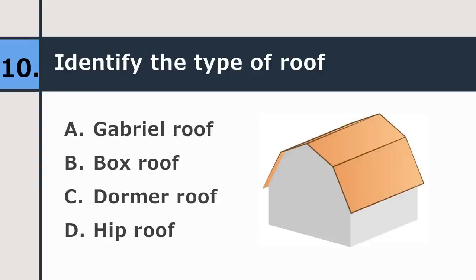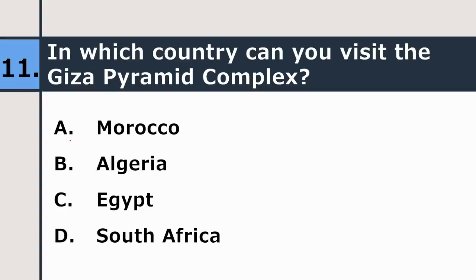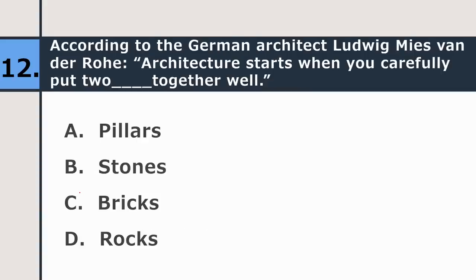Tenth question: identify the type of roof — gambrel roof, box roof, dormer roof, or hip roof? Remember, this is a gambrel roof. Eleventh question: in which country can you visit the Giza pyramid complex — Morocco, Algeria, Egypt, or South Africa? The correct answer is Egypt.